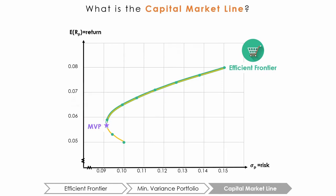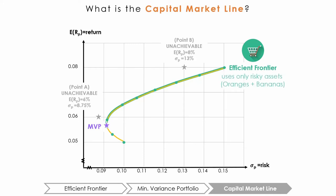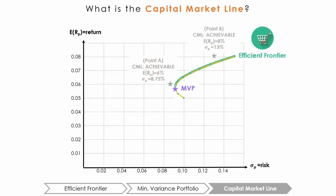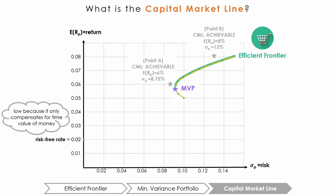Remember earlier when I mentioned points that are unachievable under the assumption of the efficient frontier? The efficient frontier focuses on creating portfolios using risky assets, while the capital market line introduces the concept of risk-free assets. The capital market theory states that when including risk-free assets in the portfolio, some points that are on the left side of the efficient frontier — that used to be unachievable — can now be achieved. To illustrate the capital market line, we take our efficient frontier and zoom out a bit. Suppose the risk-free return is 2%. Assets that pay the risk-free return essentially compensate investors for the time value of money, which is why the risk-free rate is usually quite low.